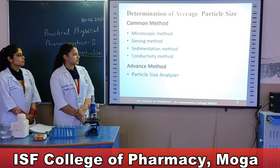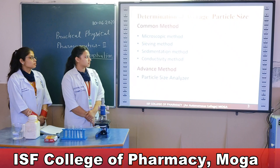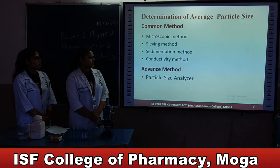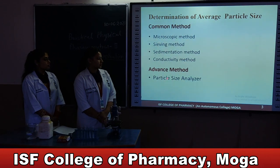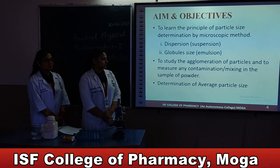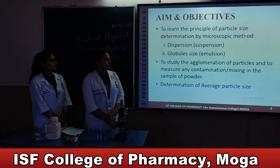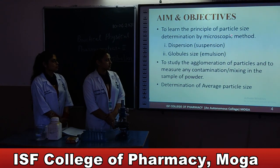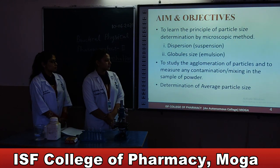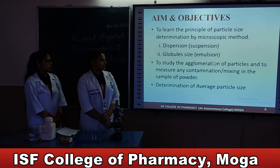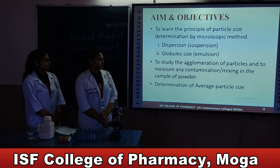Common methods used for the determination of particle size in the labs include: microscopic method, sieving method, sedimentation method, conductivity method, and advanced methods available today known as the particle size analyzer. The aim and objective of this demonstration is to learn the principle of particle size determination by microscopic method, dispersion like suspension, globule size like emulsion, to study the agglomeration of particles, and to measure any contamination or mixing in the sample of powder.